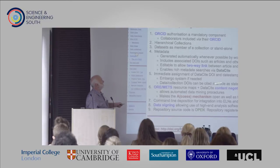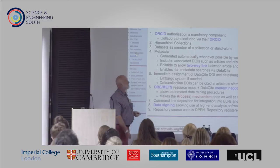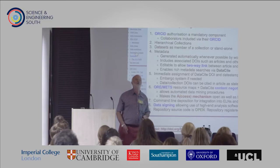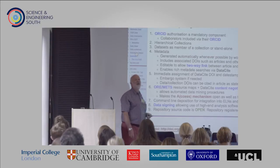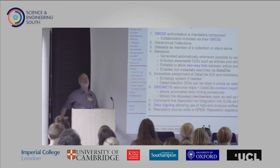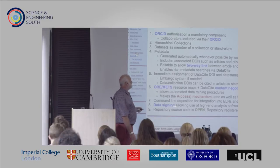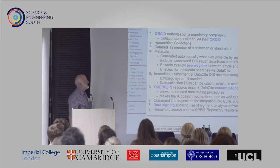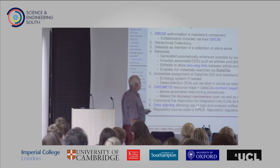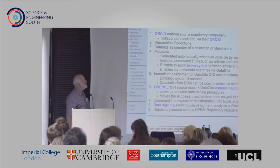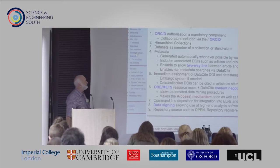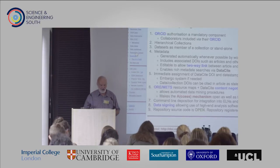Number six is something that we wanted to do that none of the existing repositories would let us — that's best illustrated when I get to the case study in a couple of minutes. We also wanted to integrate our repository into any electronic laboratory notebook people might be using via the API and command line. Number eight is something possibly controversial — data signing and allowing the use of high-end analysis software, which I'll come to separately. And the source code for this entire repository is open and on GitHub, so anybody who wants to implement it is free to do so.